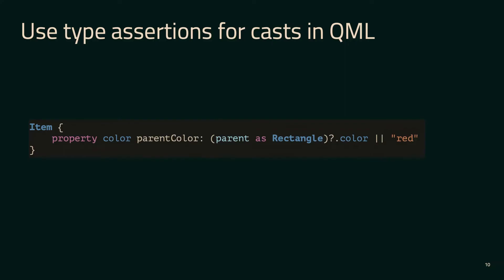The next thing is type assertions for QML types in JavaScript code. Here in this property binding, I'm using the `as` keyword from JavaScript, which is aware of QML types. The rectangle component is not a JavaScript type, it's a QML type, but we know about that type in QML so we can use it. I'm also using the optional chaining operator — if it is a rectangle, you can use the color property; if not, it's not truthy, so we fall back to a hard-coded value of red. This gives a good pattern without crazy logic — it's a very modern pattern to use in QML.